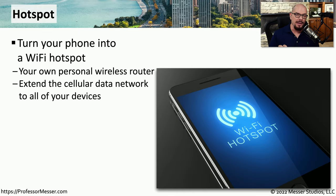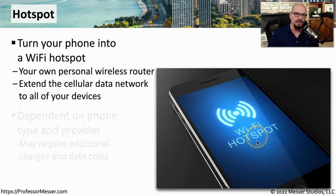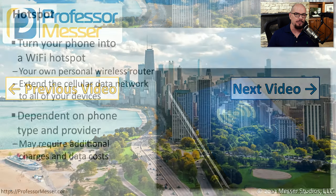On some mobile phones, you can combine or merge together the cellular network with an 802.11 network. This is when you turn your phone into a Wi-Fi hotspot — effectively your own personal data router using the cellular network to communicate to the Internet. Any other device in your area that communicates over 802.11 can use the Internet connectivity on your cellular network. Your phone may support Wi-Fi hotspot capabilities, but your provider may limit what your phone is able to do, and there may be additional charges or data costs associated with using this mode.